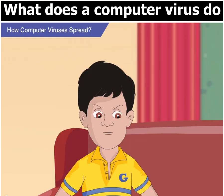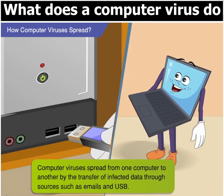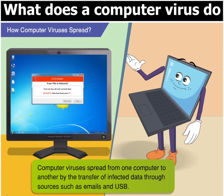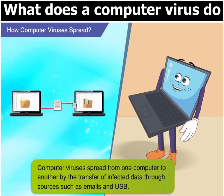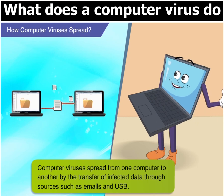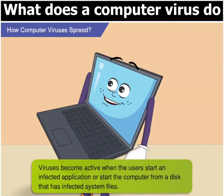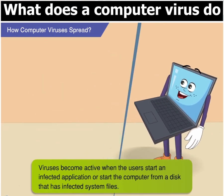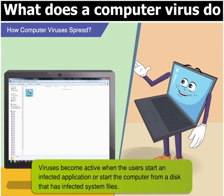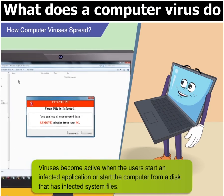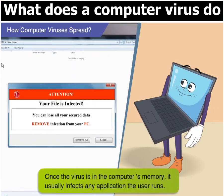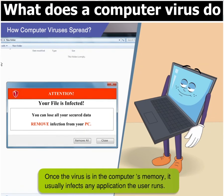One thing that beats me, Toggle, is how these viruses spread themselves from one computer to another. Very simple, Goggle. Computer viruses spread from one computer to another by the transfer of infected data through sources such as emails and USB. Viruses become active as soon as you start an infected application or start your computer from a disk that has infected system files. Once the virus is in the computer's memory, it usually infects any application you run.